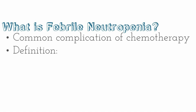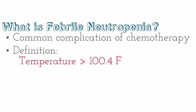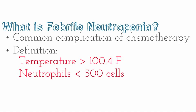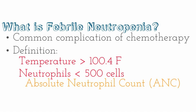So let's talk about what febrile neutropenia is. Febrile neutropenia is a common complication of chemotherapy, but it can be due to other things as well. By definition, you'd have a temperature greater than 100.4 and a neutrophil count of less than 500 cells. We can assess the neutrophil count by calculating what's called the ANC, or absolute neutrophil count. We can do this by taking the sum of percent of neutrophils plus the percent of bands and multiplying that times the white blood cell count.